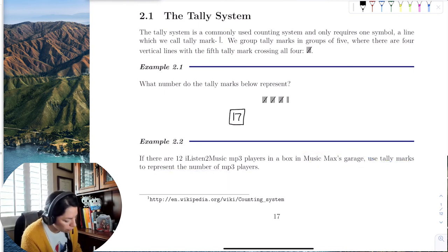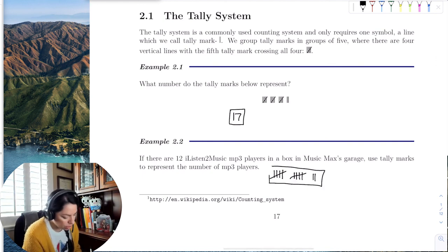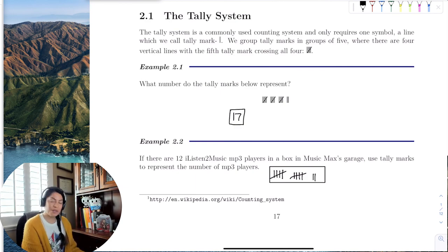So 12 would be two groups of five, so four, I call them sticks, or four lines, and a slash. One, two, three, four, and a slash, and then two left over. Okay, so that's the tally system.